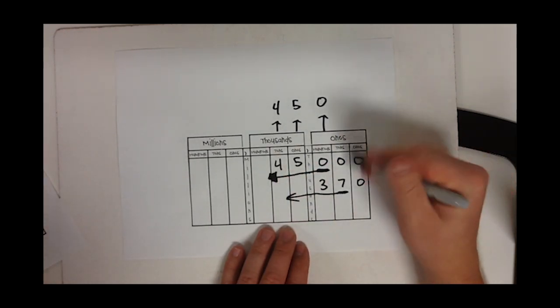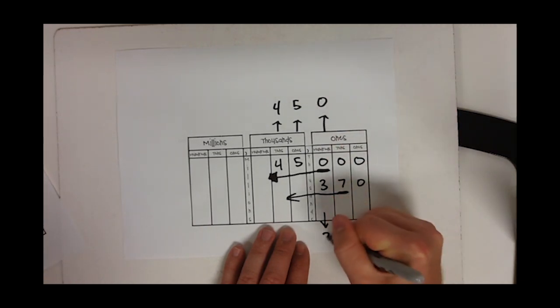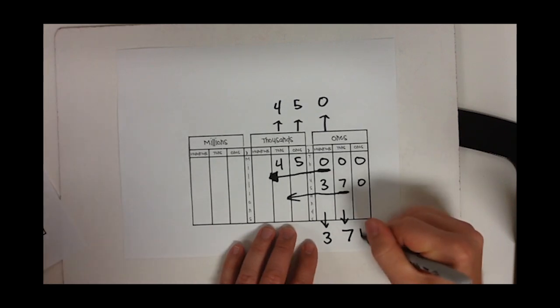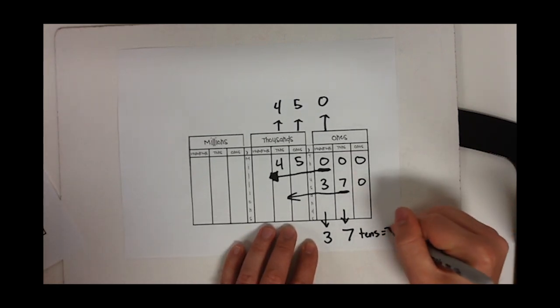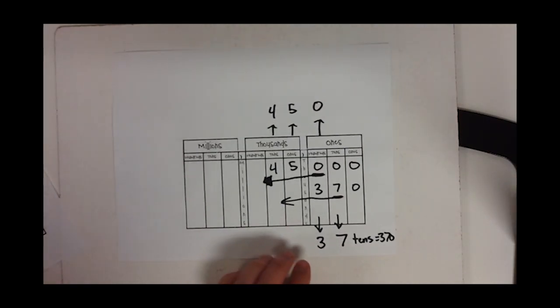...are 3 and 7, so my answer is - we'll write it down here - 37. So there are 37 tens in 370. That's another way to look at it.